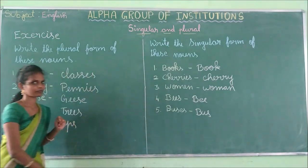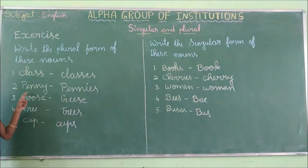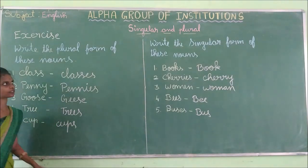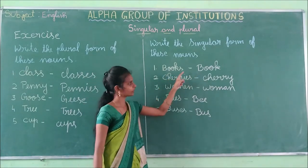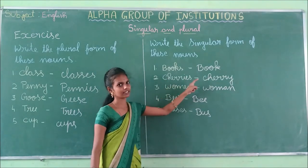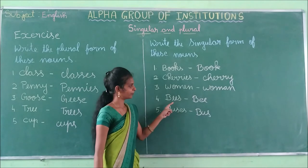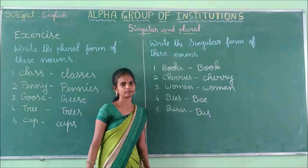Now write the plural form of these nouns. Class→classes, penny→pennies, goose→geese, tree→trees, cup→cups. And singular forms again: books→book, cherries→cherry, women→woman, bees→bee, buses→bus.